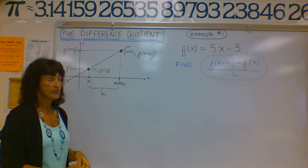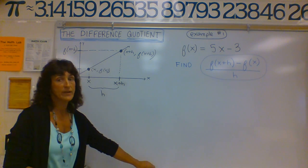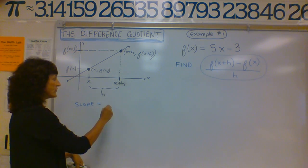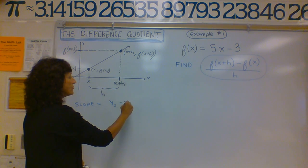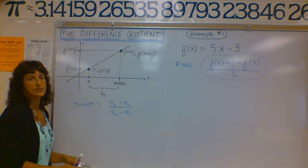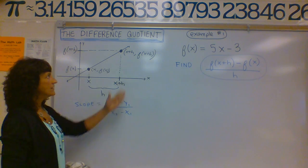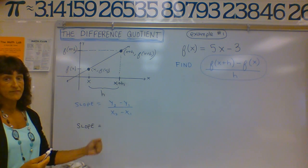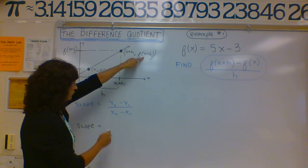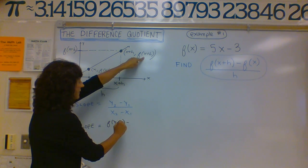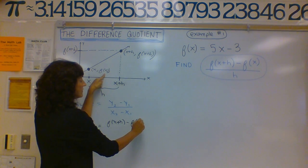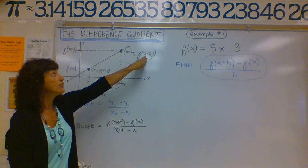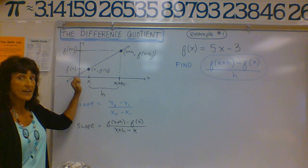So here are my two points with their given names. Now I want to find the slope of the line using these two points. To find the slope of a line — rise over run — I need to compute y2 minus y1 over x2 minus x1. So the slope is f of x plus h minus f of x, all over x plus h minus x.